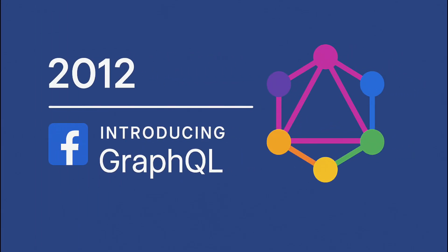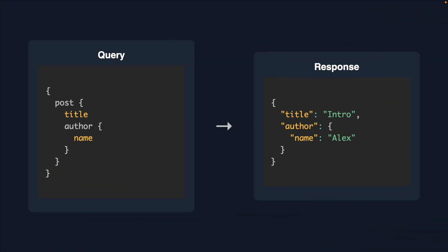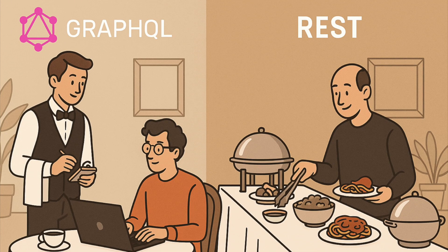GraphQL was developed by Facebook in 2012 and released publicly in 2015. It flips the REST model on its head. With GraphQL, there's only one endpoint. You send a query describing exactly what you need and get only that back. It's like walking into a restaurant and ordering from a menu instead of accepting a random buffet. This means fewer requests, less data, and faster performance on complex UIs.